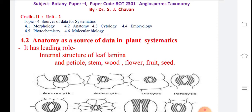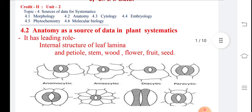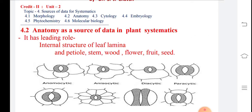Systematics is the study of detailed taxonomic conditions. Taxonomy involves the collection, identification, nomenclature, and classification of organisms. When all these processes are done together, it is called systematics. So what is the role of anatomy as a source of data in plant systematics?